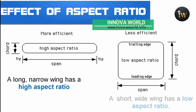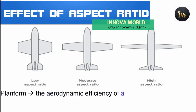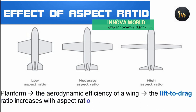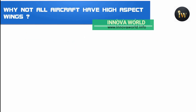A long narrow wing has a high aspect ratio, whereas a short wide wing has a low aspect ratio. Aspect ratio and other features of the platform are often used to predict aerodynamic efficiency of a wing, because the lift-to-drag ratio increases with aspect ratio, improving fuel economy in aircraft.